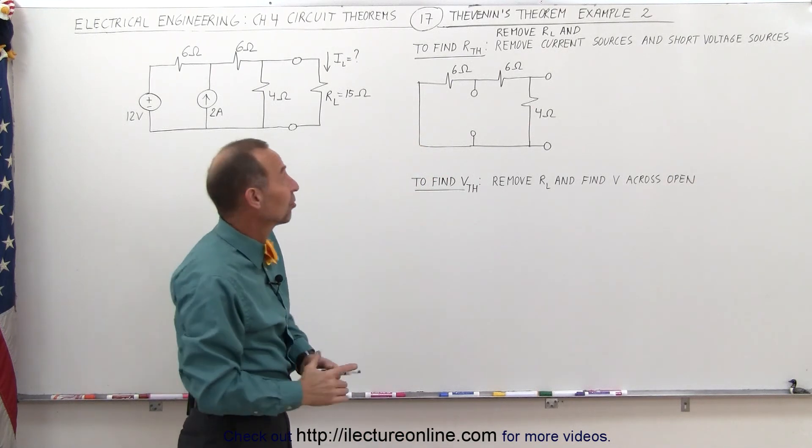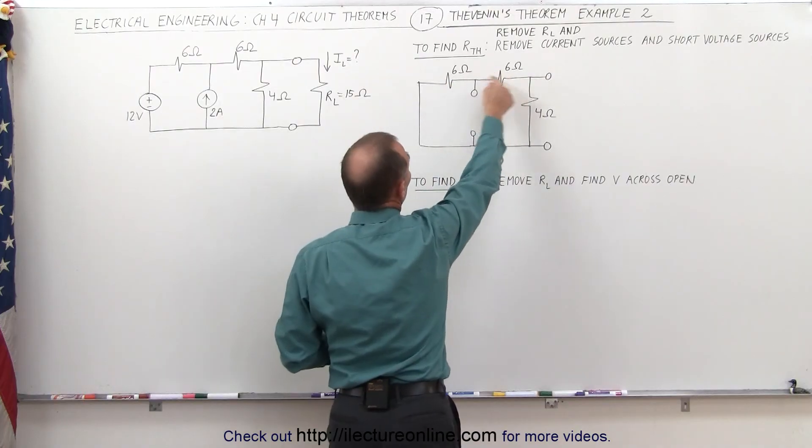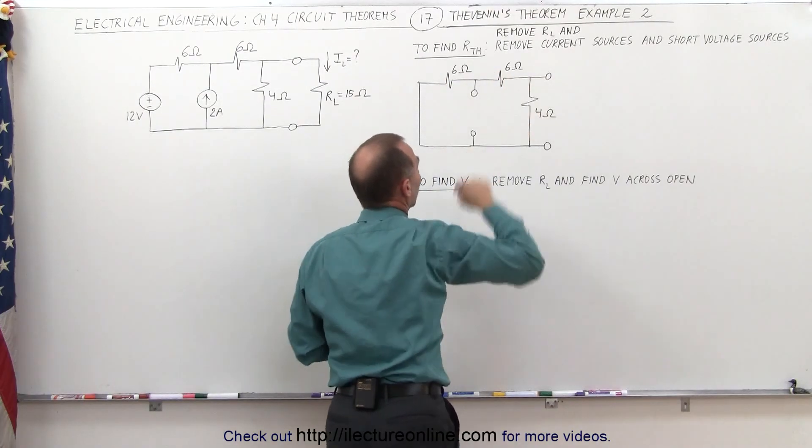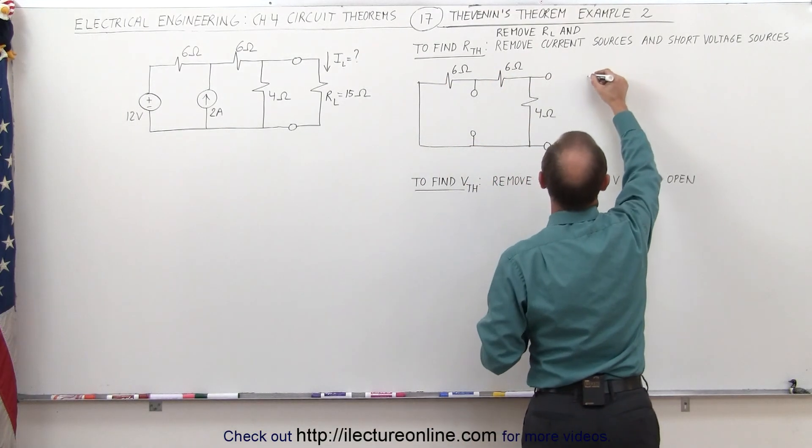So basically, what we have is two resistors in parallel. If you combine these two, that's a 12 ohm resistor and a 4 ohm resistor. So we can redraw that circuit right here.